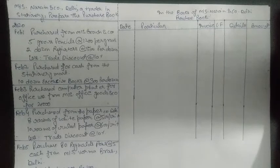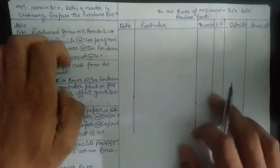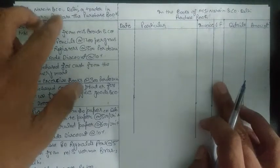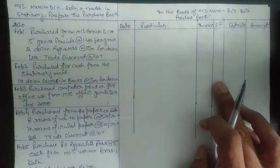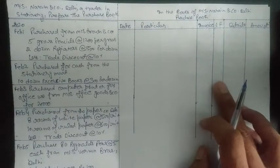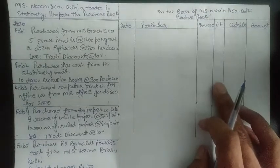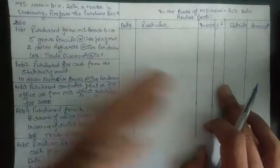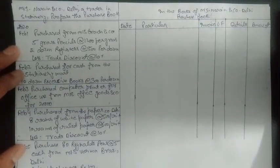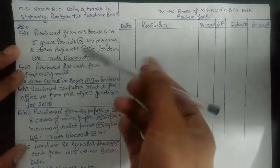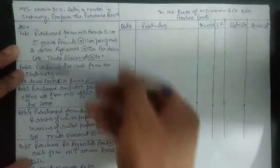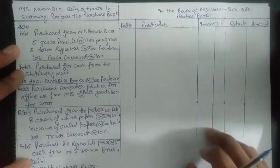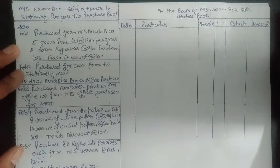Let's start with a question. Mr. Narain and Company from Delhi is a trader in stationery products. We need to prepare a purchase book for him. He may have both cash entries and credit transactions, but we need to choose only credit transactions to post into the purchase book, because for cash transactions we have the cash book. Let's start with the purchase entries Mr. Narain made over the last five days.